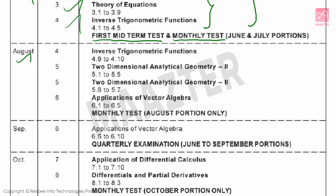Next, August. Chapter 4: Inverse Trigonometric Functions — completing the remaining topics. Then Chapter 5: Two Dimensional Analytical Geometry II. Then Chapter 6 begins. We will complete these chapters in the August monthly test portions.